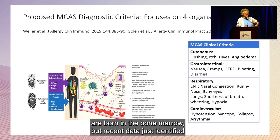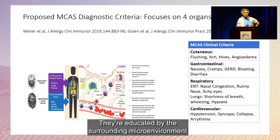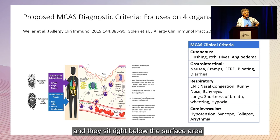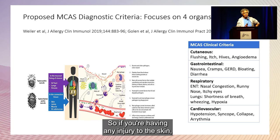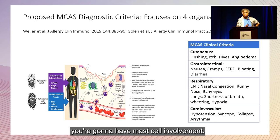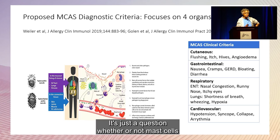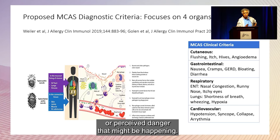Mast cells are born in the bone marrow, but recent data identified they actually come out of the yolk sac. They're educated by the surrounding microenvironment and sit right below the surface of any part of your body that's exposed to the environment. If you're having any injury to the skin, the gastrointestinal tract, or the genitourinary tract, you're going to have mast cell involvement. It's just a question of whether mast cells are driving the bus or reacting to some danger or perceived danger.